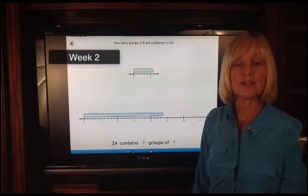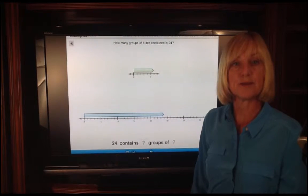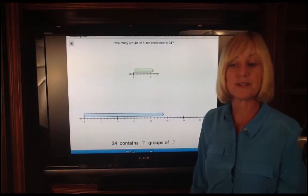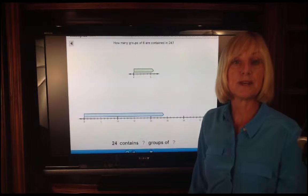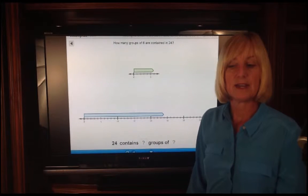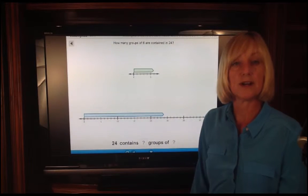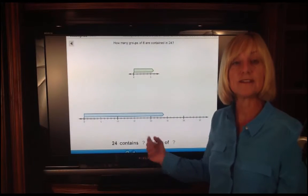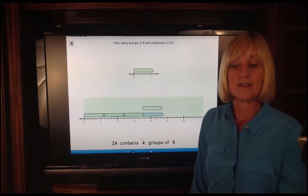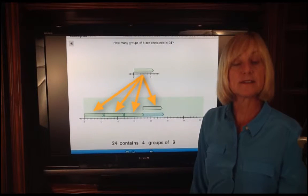In the second week of instruction, students take that understanding of multiplication facts, and they work with the same numbers to do division. So we are working with combinations of three and six. In this example, students are trying to figure out how many groups of six are contained in 24. So they are introduced to a phrase that gives meaning to the model. They drag the groups of six into the starting value, and they complete the phrase.